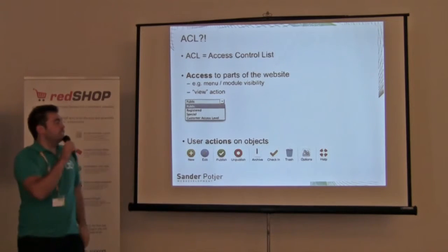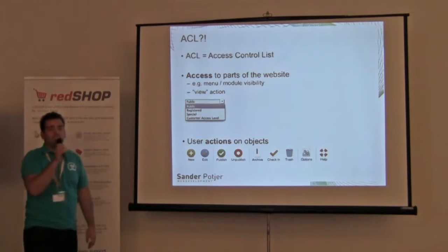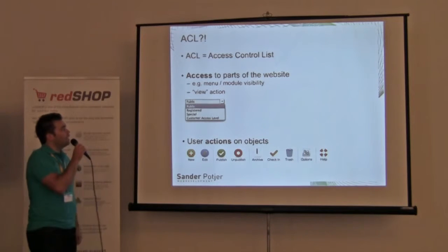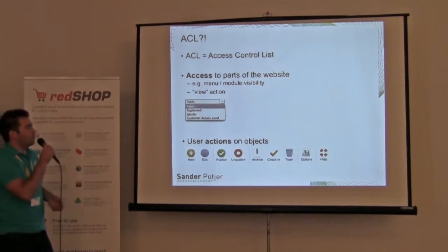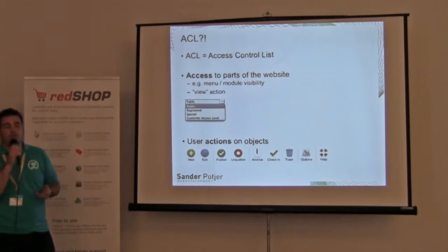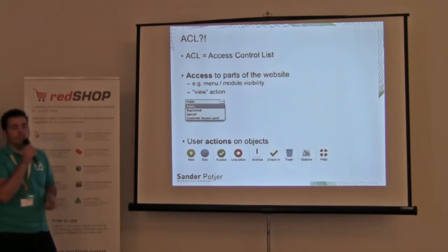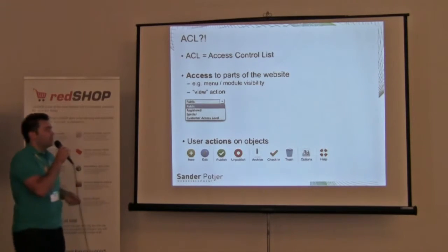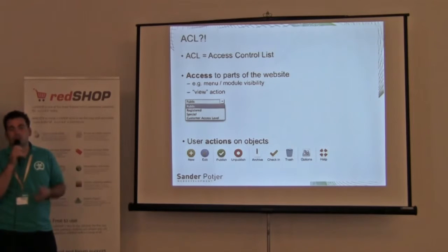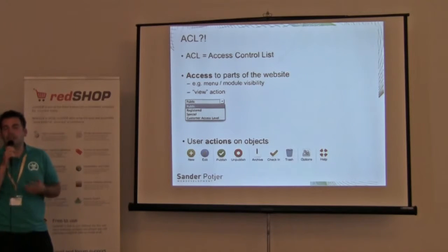What is ACL? ACL stands for Access Control List. With access control, you can give access to parts of the website — for example, which user groups are able to see a specific module, menu, or article. Those are the view actions. Then we have user actions on objects: who is able to create an article, delete an article, or edit an article.